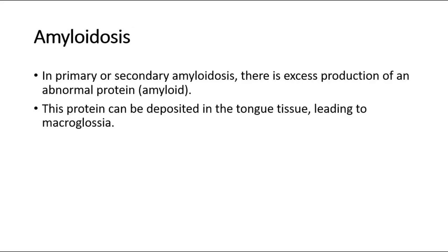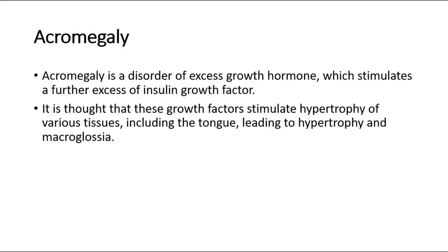In amyloidosis — both primary and secondary — there is excess production of an abnormal protein called amyloid. This protein can be deposited in the tongue tissue, leading to macroglossia.